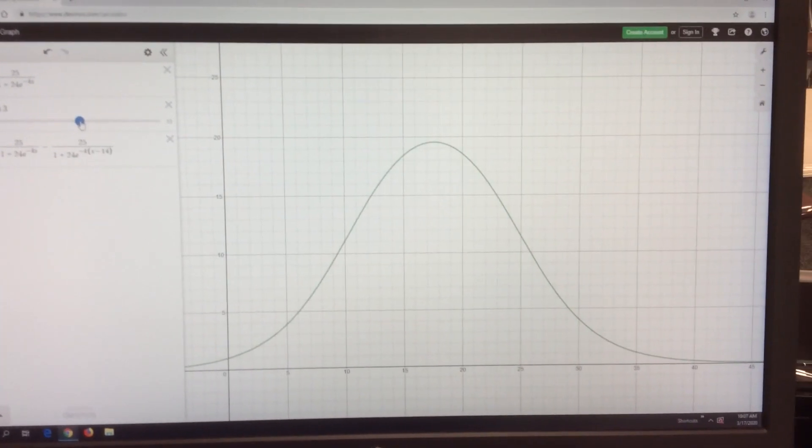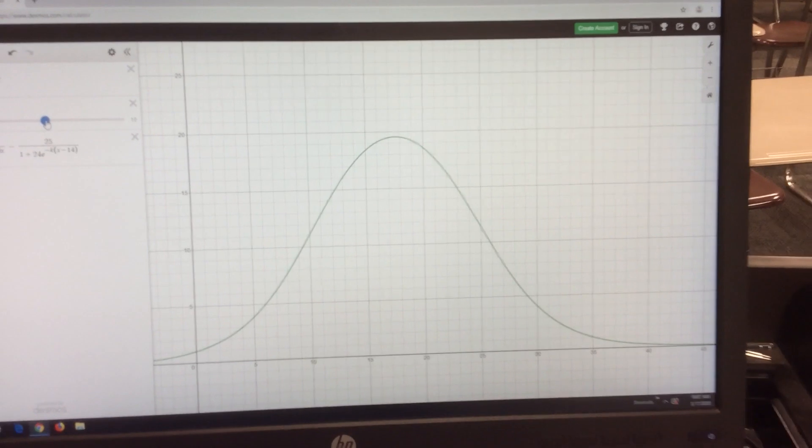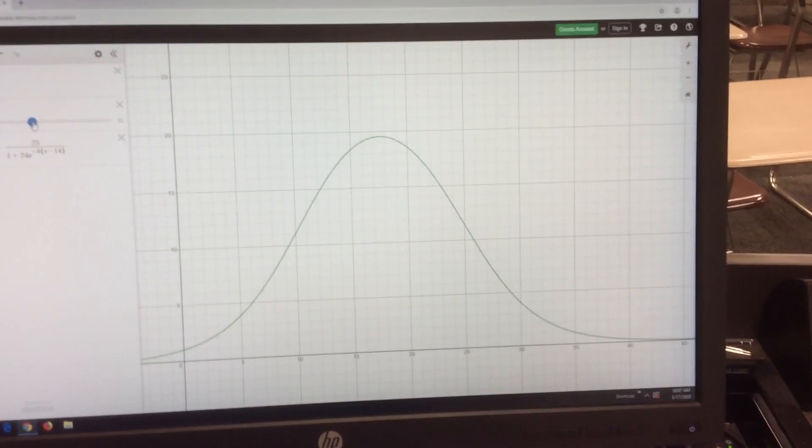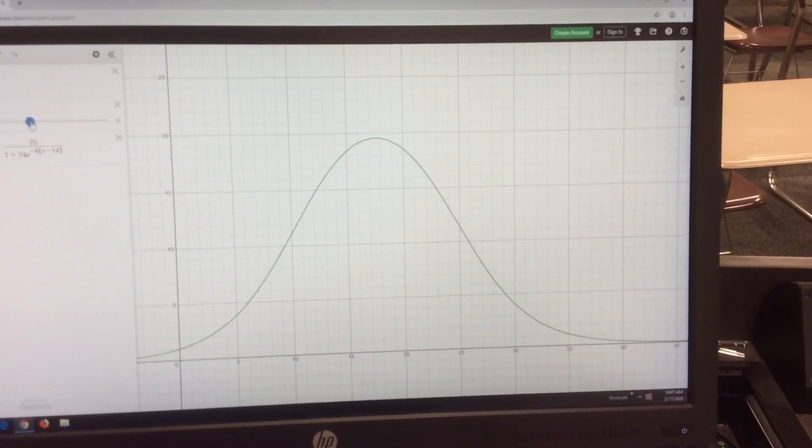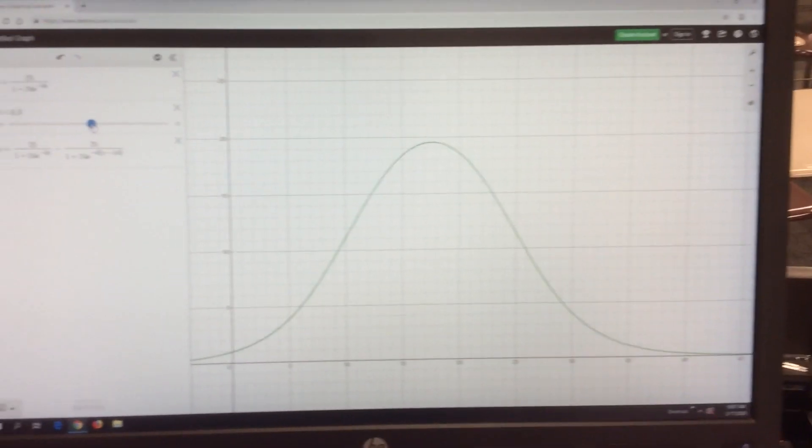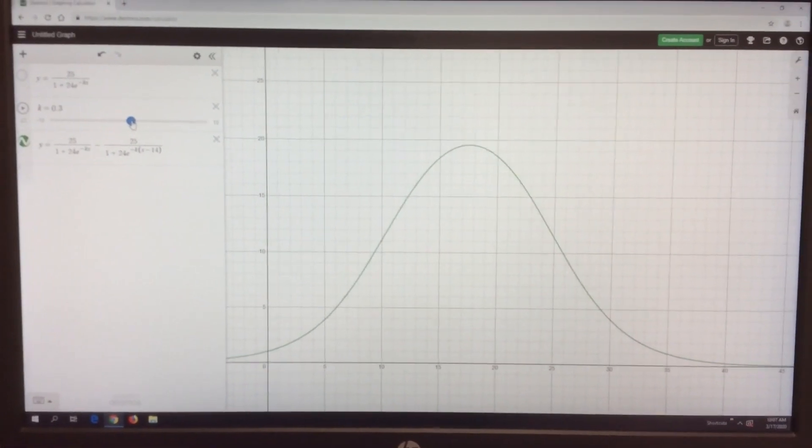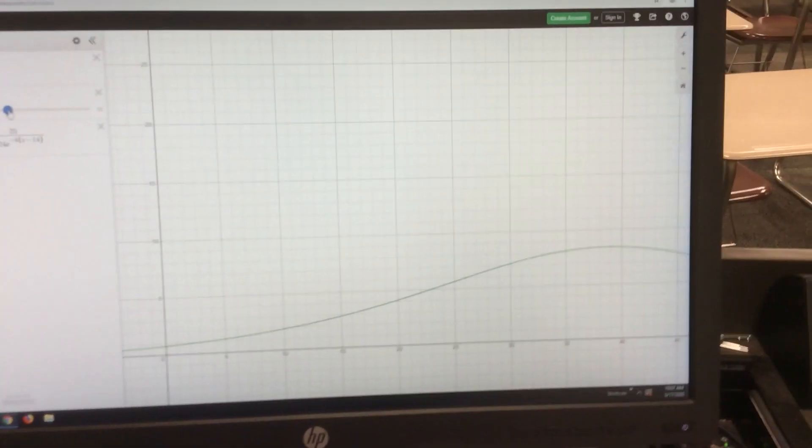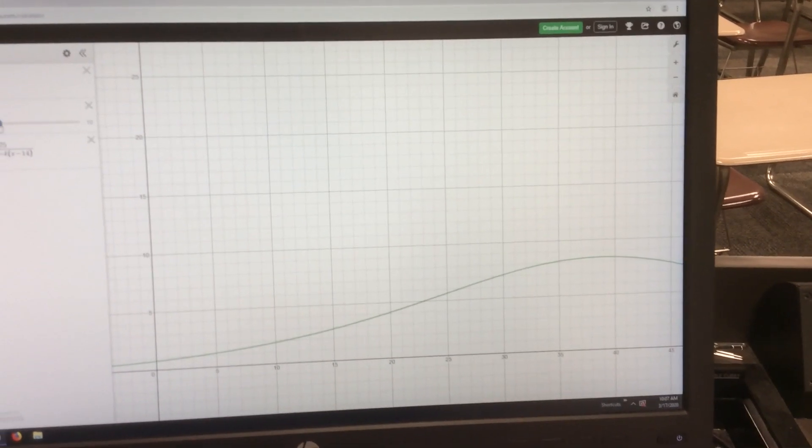Societally, how we make the value of K smaller is by social distancing, making sure that we're not touching our faces and whatnot. Listen to them. They want to help you flatten this curve. The model doesn't change. The value of K can. And it begins with you.